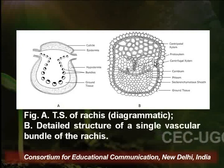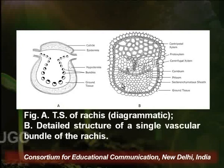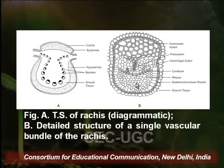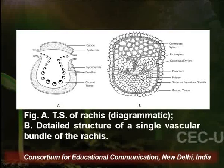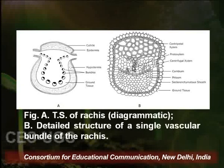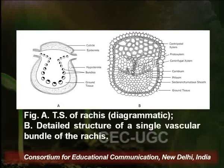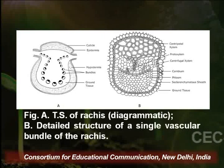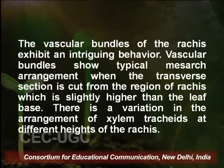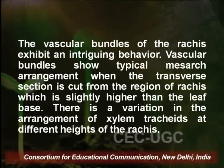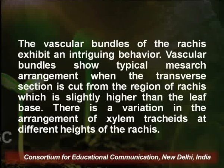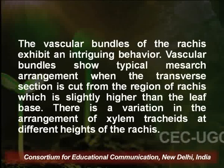Each vascular bundle has conjoined xylem. On the lower side, they have phloem tissue. In between xylem and phloem tissue is present cambial tissue. The proto-xylem is towards the inside and this vascular bundle is surrounded by a pericycle. The vascular bundle of the rachis exhibits an intriguing behaviour — the vascular bundles show a typical mesarch arrangement when the transverse section is cut from the region of rachis slightly higher than the leaf base. There is a variation in the arrangement of xylem tracheids at different heights of the rachis.